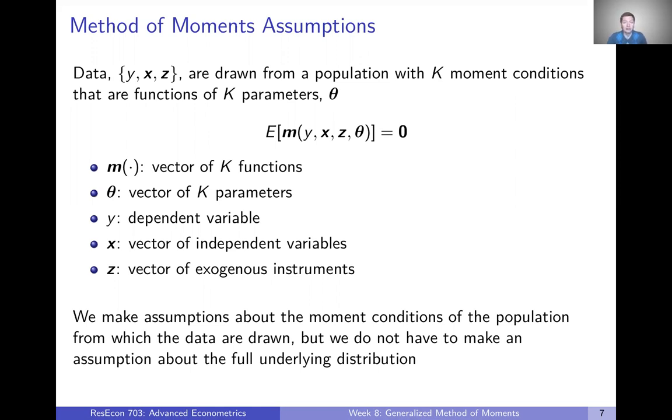We don't have to make an assumption about the full distribution. In this case, we're going to assume that our data, and we're going to represent our data by y, x, and z. We'll see as we keep going why we're going to represent it this way, but the basic idea is y, x, and z are just variables that we can think of as a collection of data.